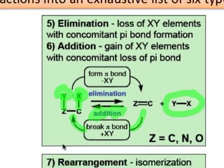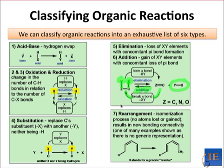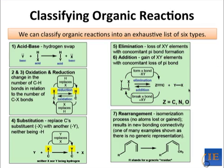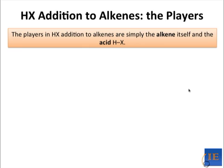Let's begin by discussing the addition of strong acids such as HBr and HCl across the carbon-carbon double bond in alkenes. Let's look first at the reactants for this process: the acid and the alkene.